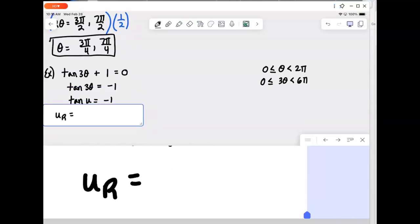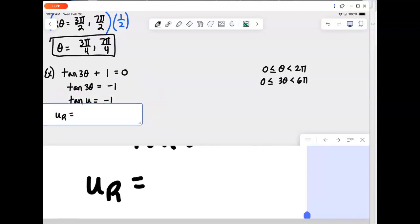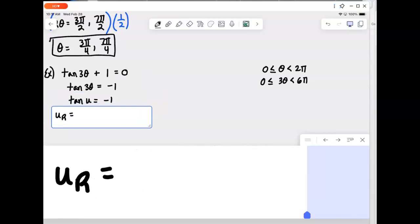So, u sub r. So, tangent here is equal to negative 1. So we'll be looking for what angle would give us a tangent of 1. And that reference angle is the angle in the first quadrant. So, that's one of our key values, our memorized values, 45 degrees or pi over 4 in radians.